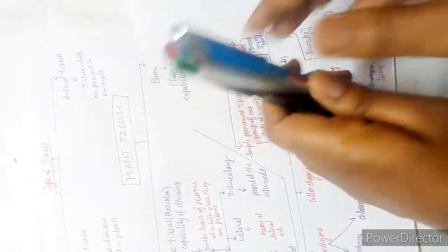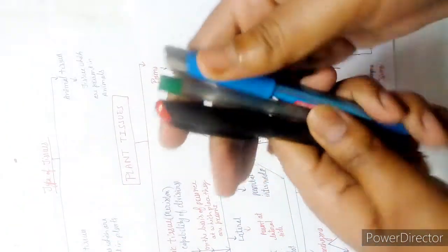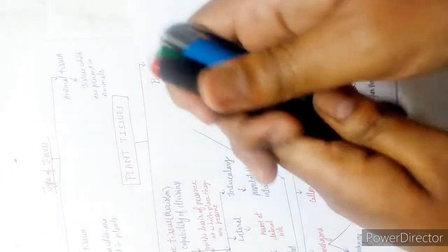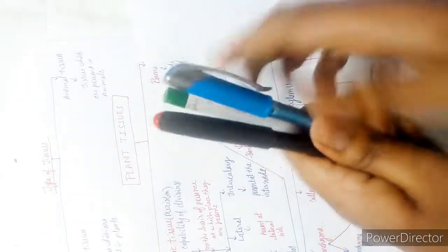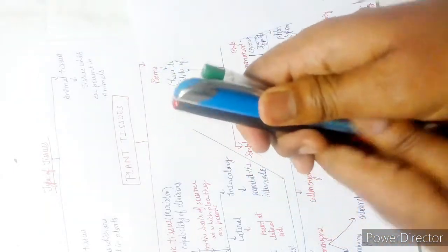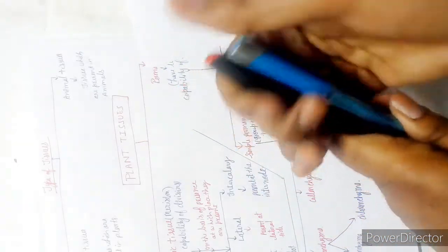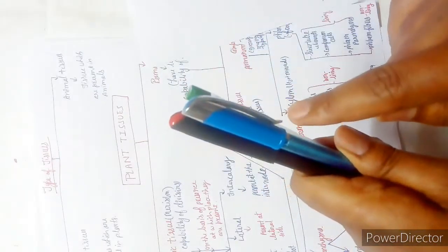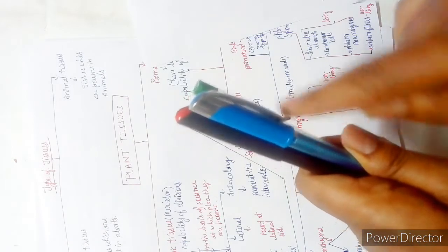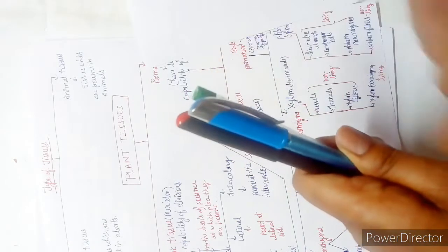Complex permanent tissues are made up of many types of cells that coordinate with each other and perform a single function.